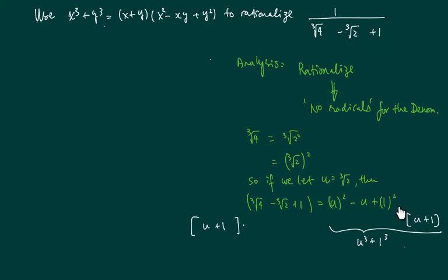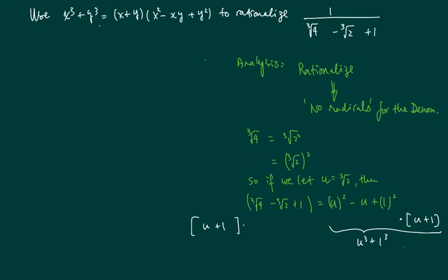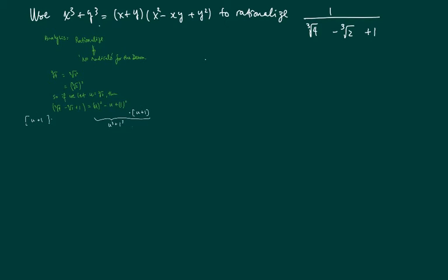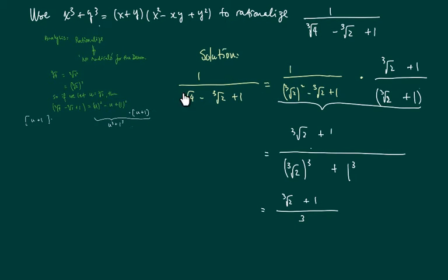Once we have recognized this one, all we have to do is multiply left and right by u plus 1, then the right-hand side can be simplified into u cubed plus 1 cubed, and on this side, whatever we have, we'll just clean it up. Okay, so let's write up the solution. Alright, so here's the solution.